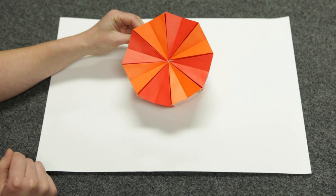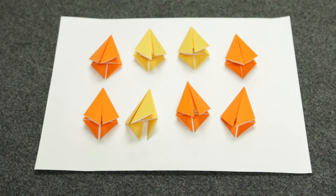To make a protein channel you'll first need to make eight amino acids. You can use just about any kind of paper you want as long as all eight pieces are square and the same size.